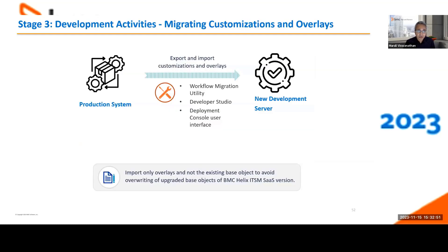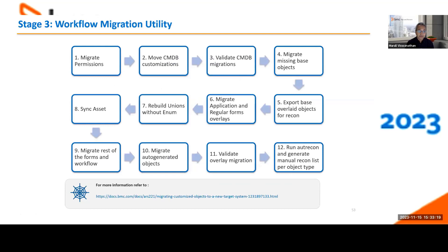For migrating your customizations and overlays, we have a new utility called the Workflow Migration Utility or Customization Migration Utility — available for download from EPD. Note the caveat: this can only be used if your source version is 20.02 or later. If you have a source version earlier than 20.02, you have to use Developer Studio and Deployment Console.